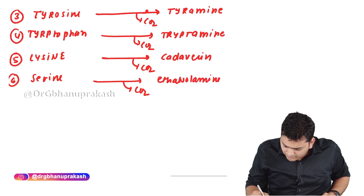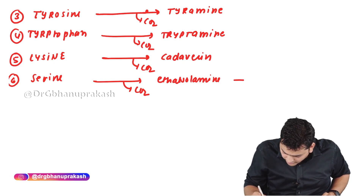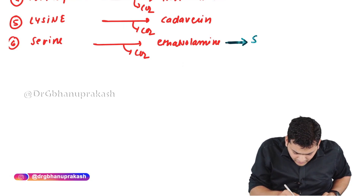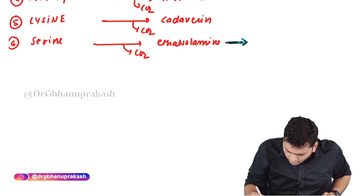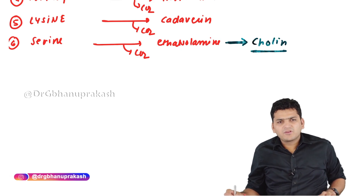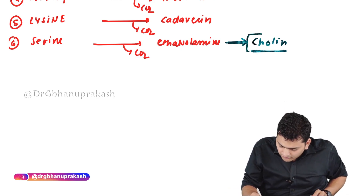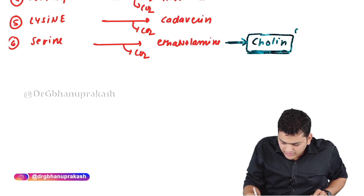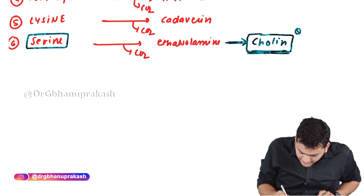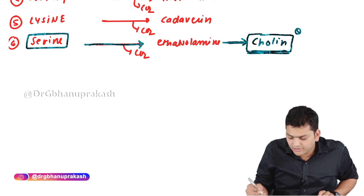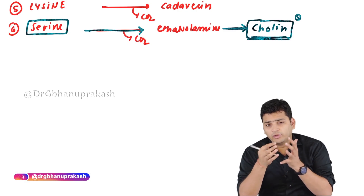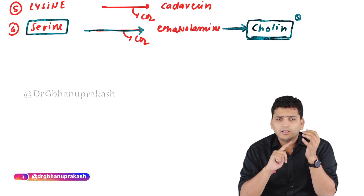Ethanolamine can further convert — by reactions other than decarboxylation — into choline. So if they ask which amino acid is the precursor of choline, the answer is serine. Serine first converts into ethanolamine, and ethanolamine further converts into choline. This was one of the questions asked in the net board exam.